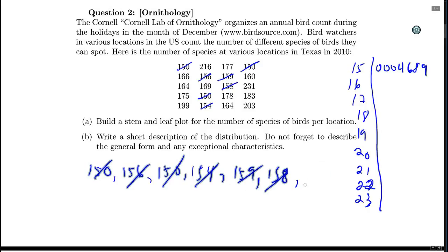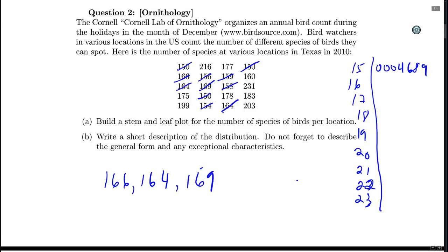So then we do the same for the hundred and sixties. I have 166, 164, 166, 164, and then 169, and then 164, 160, 164, 160. So I have zero, and then two fours, and then six and nine. So that's the 160s.